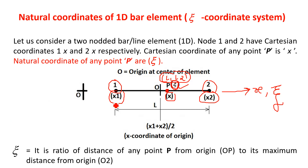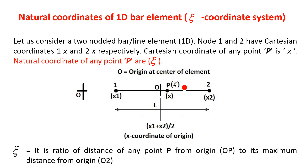Please understand this difference: when you represent natural coordinates by L1, L2, there will be two natural coordinates equal to the total number of nodes — two nodes, so two natural coordinates. But when you represent natural coordinates using ξ, eta, there is only one natural coordinate. ξ is the natural coordinate of point P, where X is the Cartesian coordinate of point P, and X1, X2 are the Cartesian coordinates of node number 1 and node number 2.